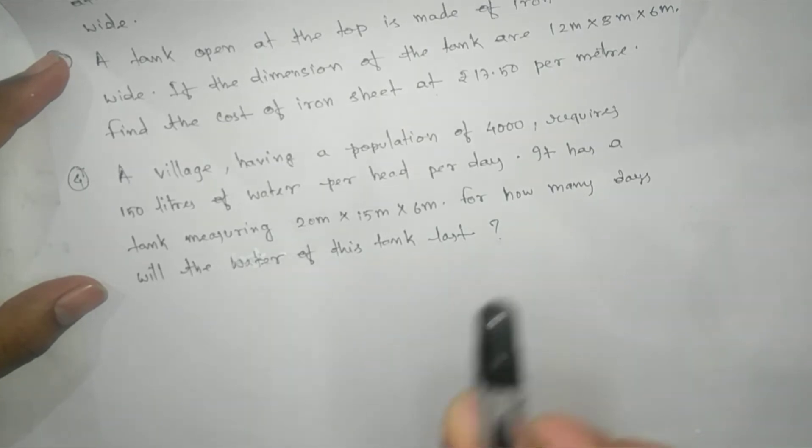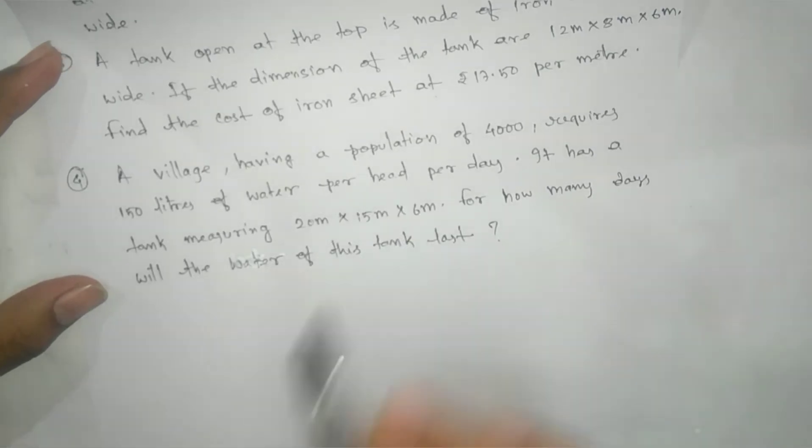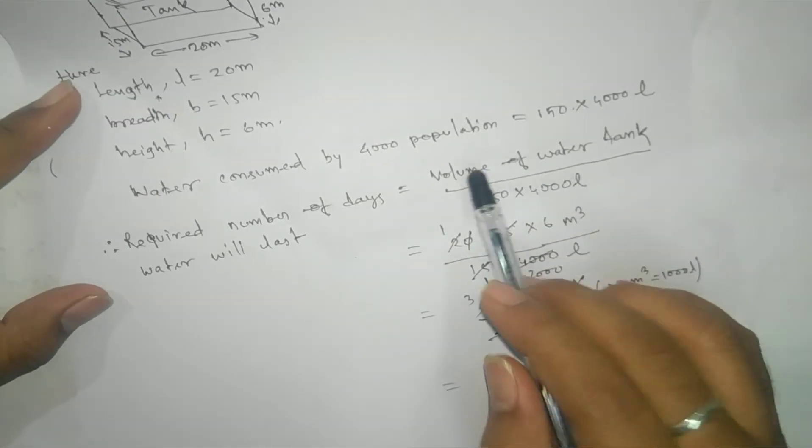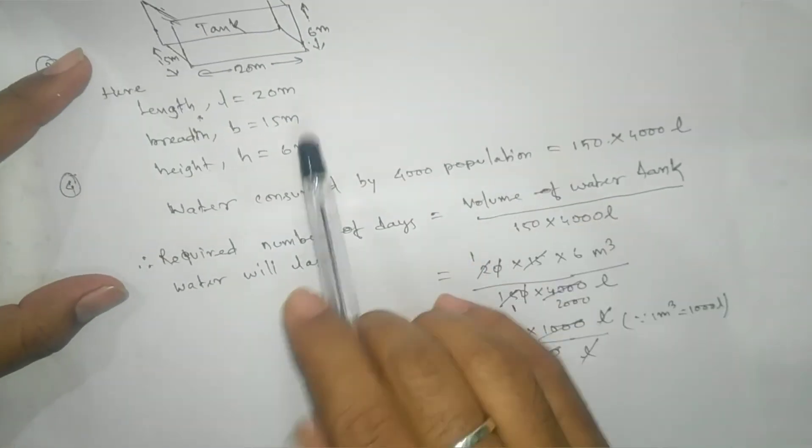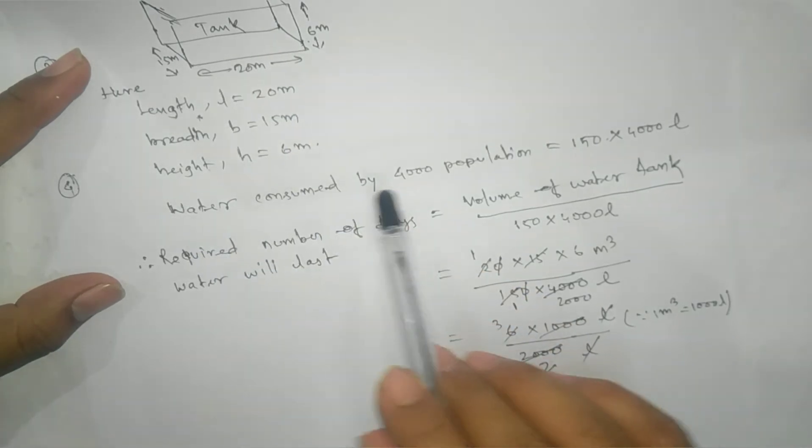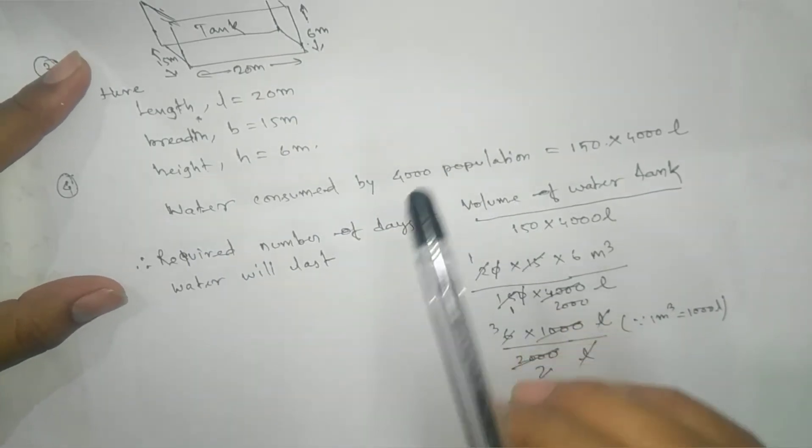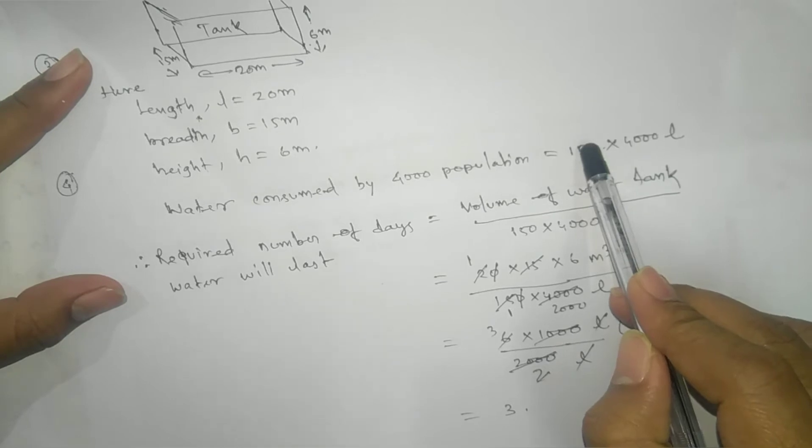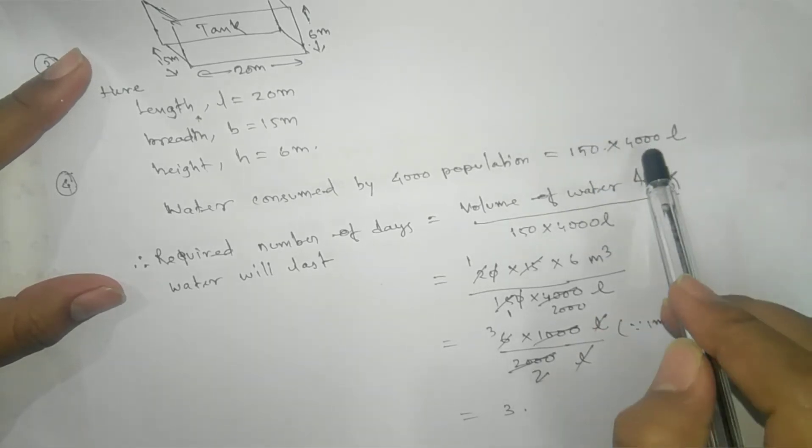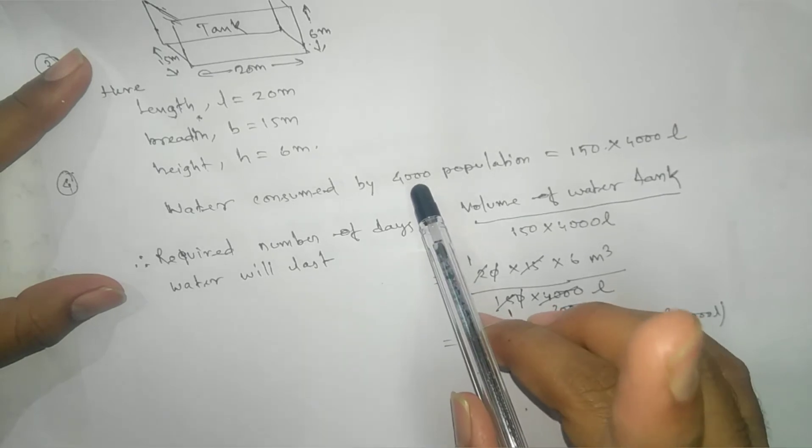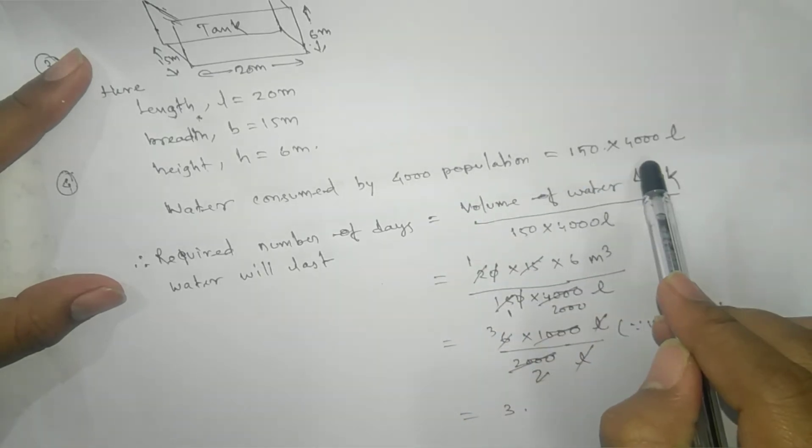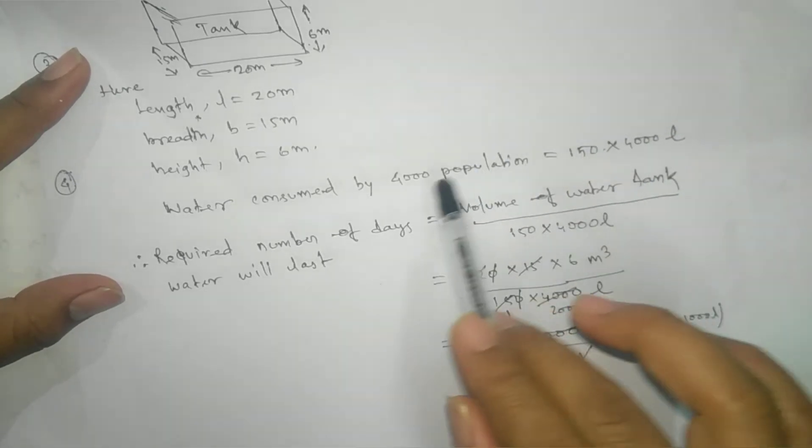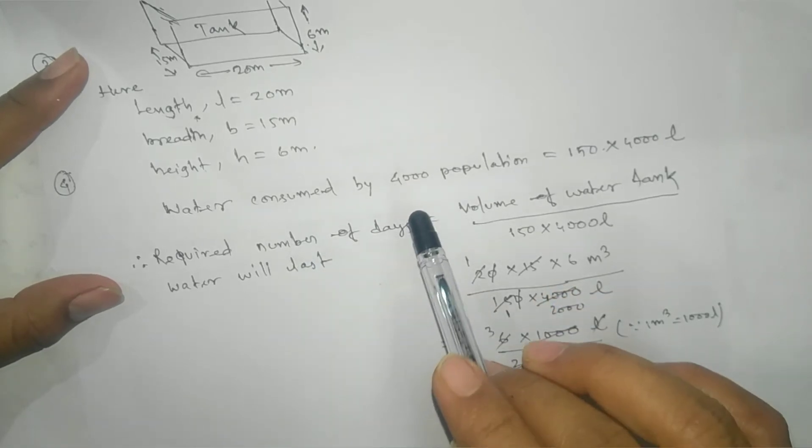First we need to find the volume of that tank. We have the dimensions: length, breadth, height. Water consumed by 4000 population: one person takes 150 liters per day, so 4000 people need 4000 times 150 liters. This is water consumed by 4000 population. Now for how many days?